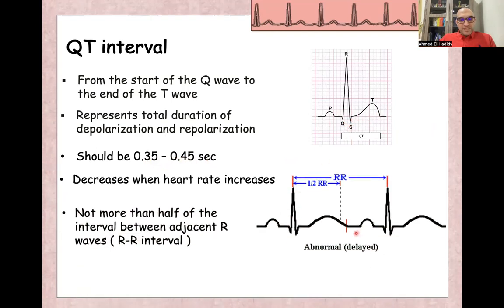And normal estimation for the QT interval, it should be less than half the distance between RR interval. So normally it's less than half the distance. If it exceeds half the RR interval, so this is prolonged or delayed QT interval. So here this is the normal and because it's less than half the RR interval, if exceeds half the interval.